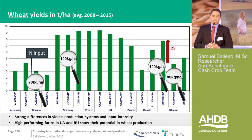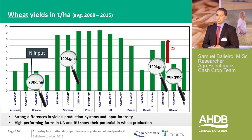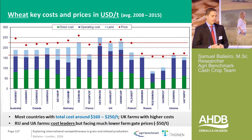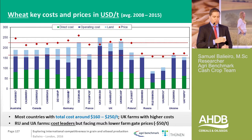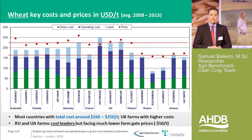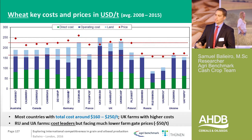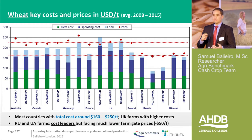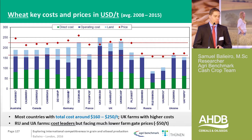Looking at costs — these are wheat costs, the cost to produce one ton of wheat, in dollars per ton. When comparing on a ton-per-ton basis, countries are much more similar. Even though Canada and Australia have much lower yields, they also invest proportionally, so the cost per ton is very similar. The costs here include crop protection, seeds, fertilizer, and operating costs.